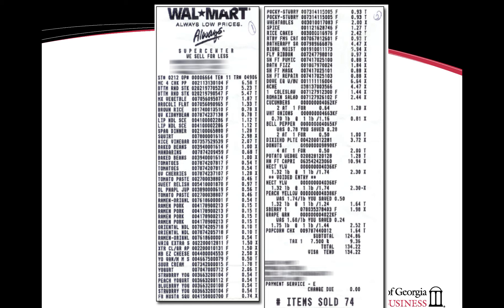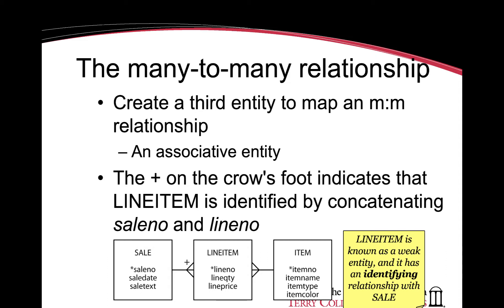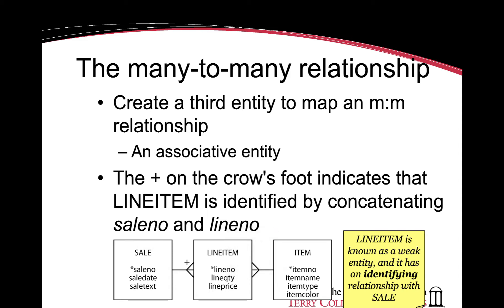Information about a many-to-many relationship is captured in a specific way — in a third entity that maps the many-to-many relationship. This third entity is known as an associative entity. An associative entity has two foreign keys, one from the one side of each of the other two entities, and it captures data about the many-to-many relationship between those two entities.